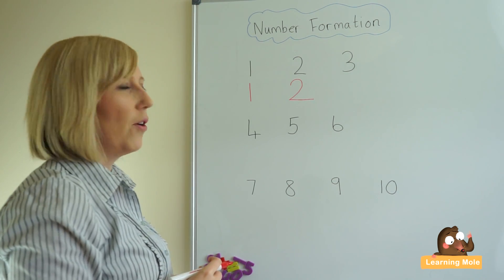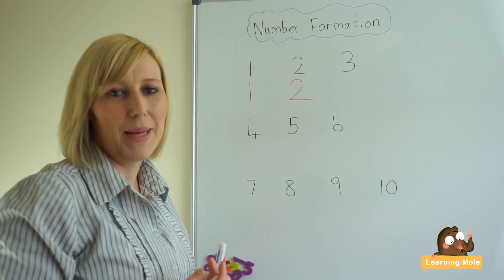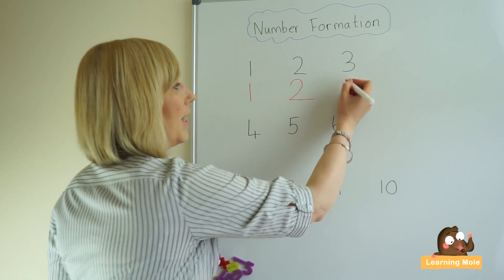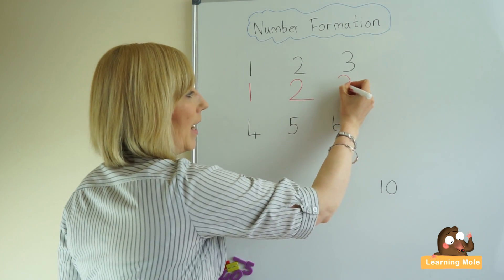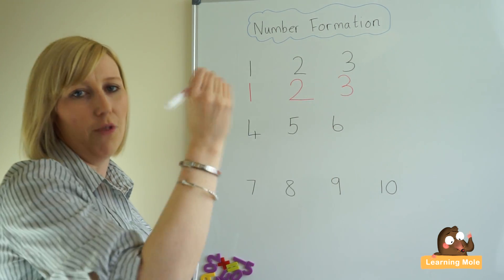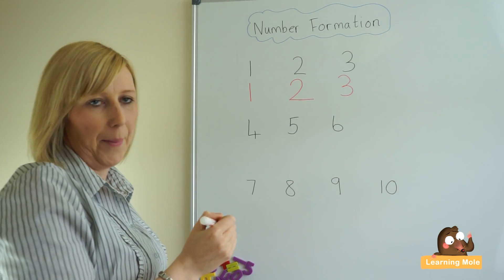Number three, we talk about that being our bumpy number. So we talk about round with a bump and another bump.